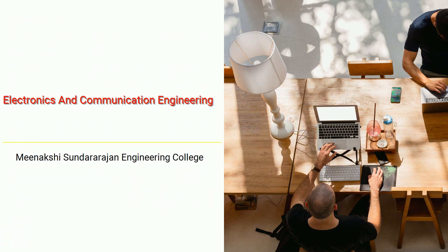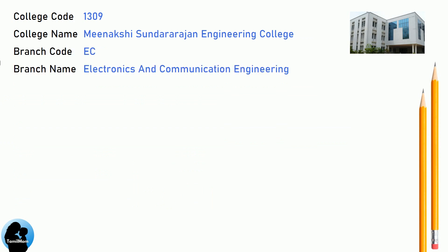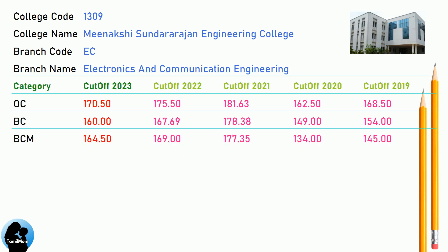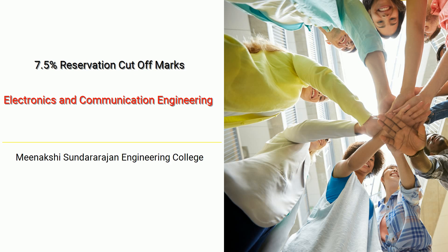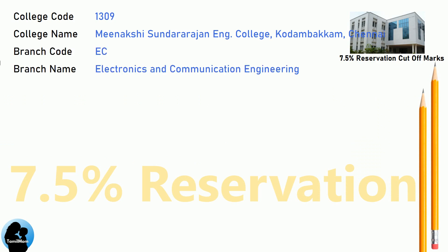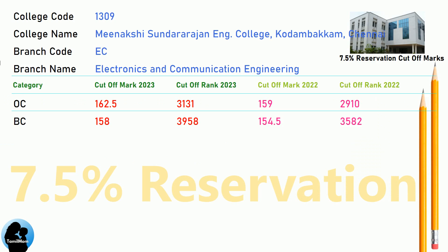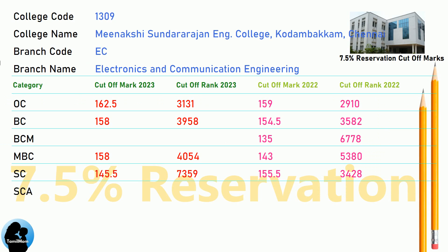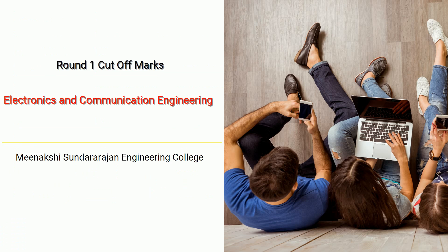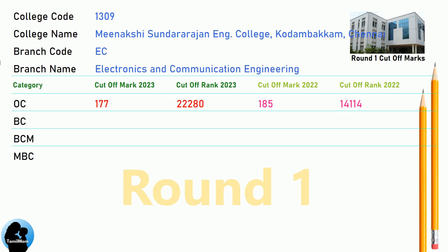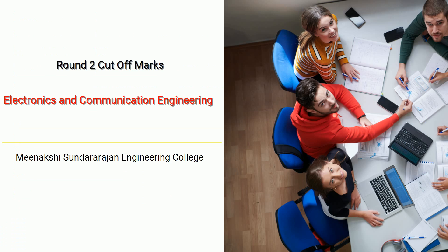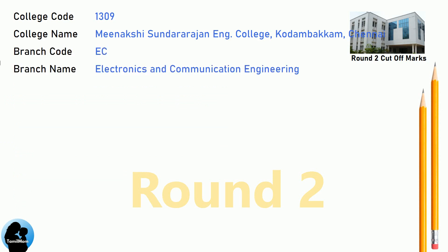DNA Cut-Off for Meenakshi Sundararajan Engineering College in Electronics and Communication Engineering. DNA 7.5 Reservation Cut-Off for Meenakshi Sundararajan Engineering College in Electronics and Communication Engineering. DNA Round 1 Cut-Off for Meenakshi Sundararajan Engineering College in Electronics and Communication Engineering. DNA Round 2 Cut-Off for Meenakshi Sundararajan Engineering College in Electronics and Communication Engineering.